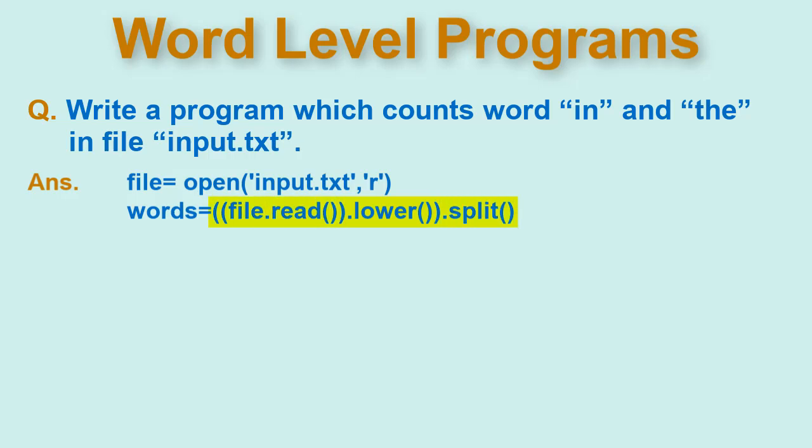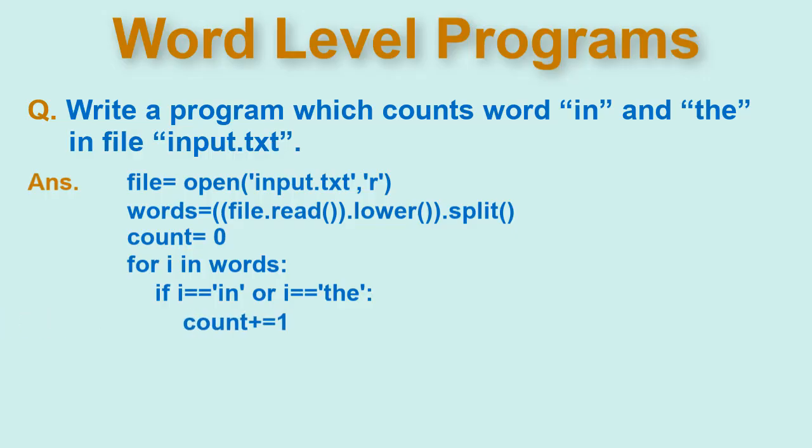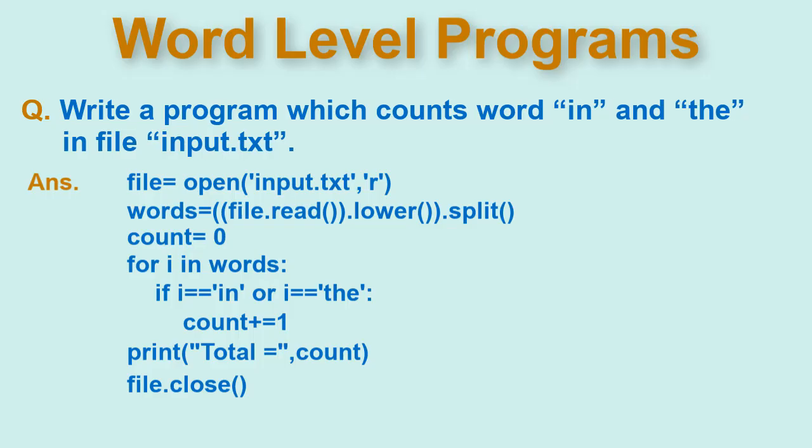This will give you list which has all the words in the file. Now we will first set the count to 0. Then we will iterate through the list. Inside the loop we will compare to in and the and increment the count. Once we are outside the loop, we will print the count. This program can be edited to find any other word as per the question.